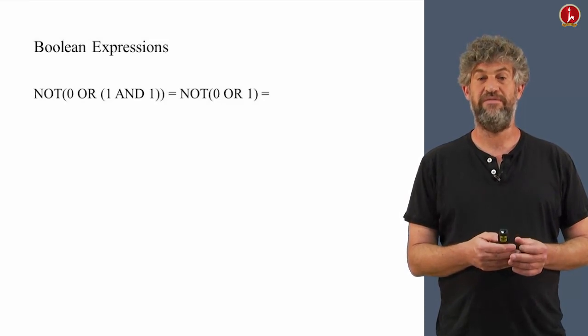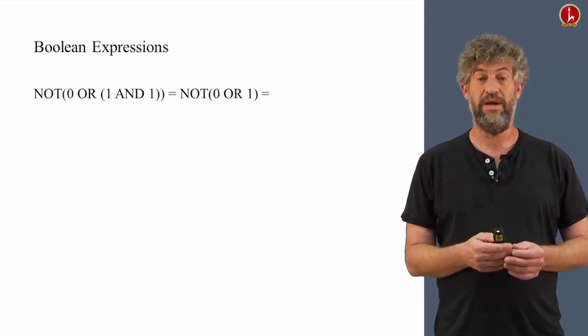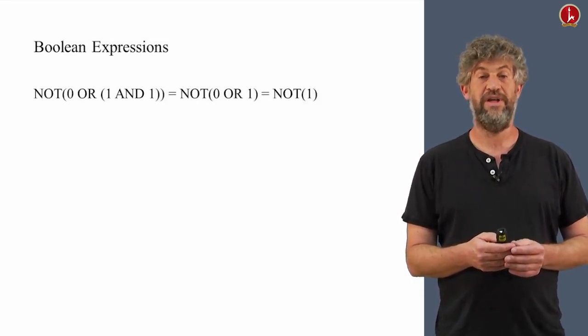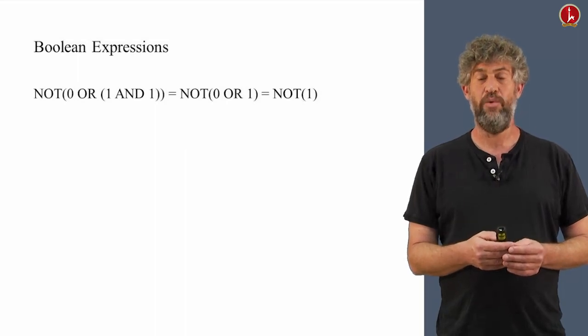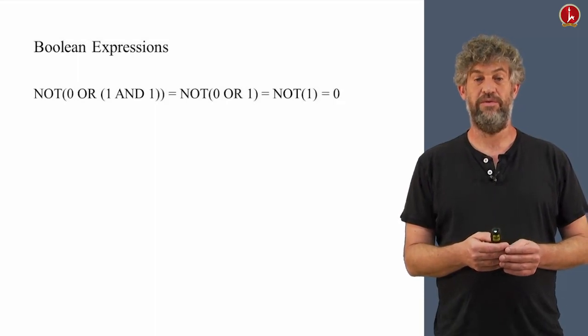So the whole thing simplifies to NOT(0 OR 1). We know how to evaluate 0 OR 1, that's going to be 1, because it's an OR operation. So that's equal to NOT(1). And now we know how to evaluate NOT(1), that's simply 0. All very simple.